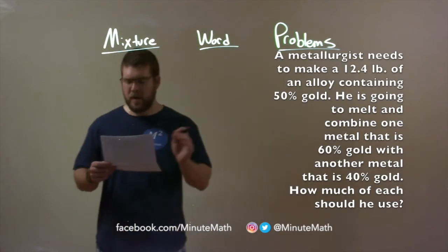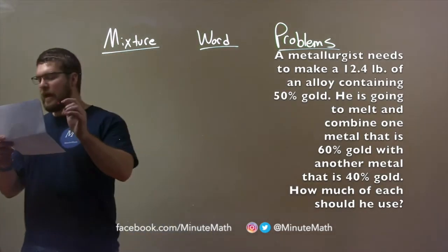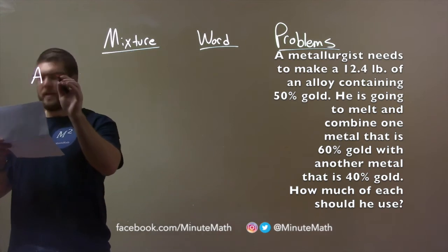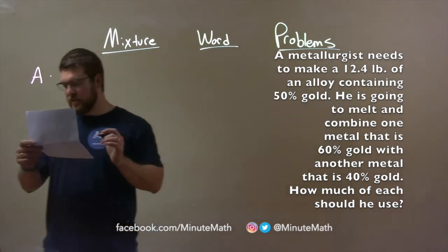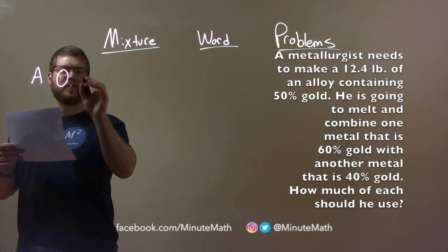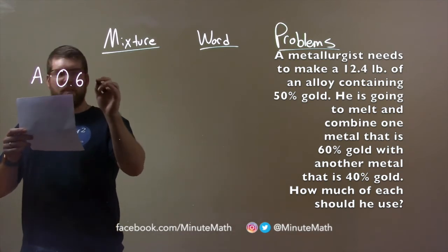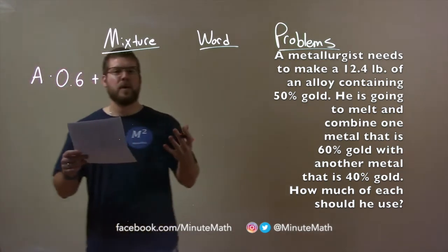Okay, so this is a little tricky. Our first metal, let's call it Metal A, so we have Metal A here. That one contains 60% gold, so as a decimal, 0.6. That combines with our second metal, Metal B, which contains 40% gold.